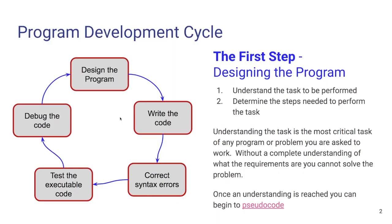Today we are going to show you about the program development cycle and we are going to go through this entire cycle as we start to develop an example project, and then you can move into your actual project. We'll go through the development of the problem, make sure we understand it, then go through the planning phases and how to implement that plan through pseudocode and flowchart, and then how to actually code it up in Python.